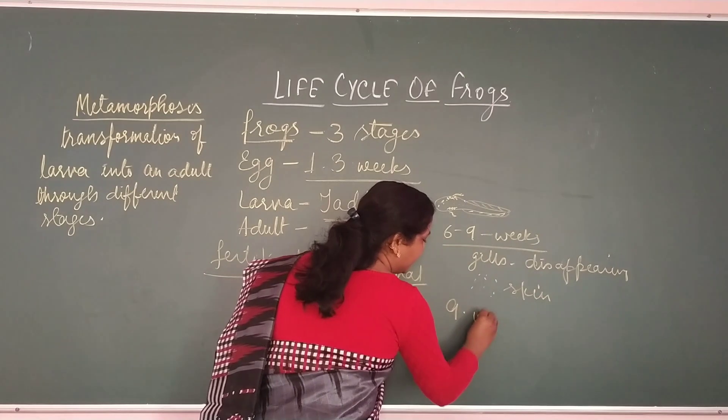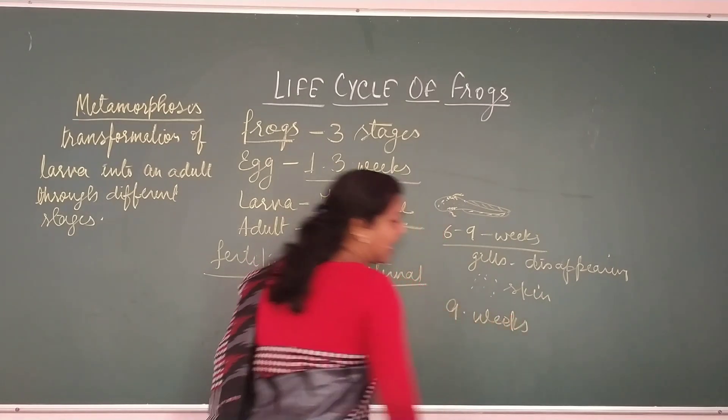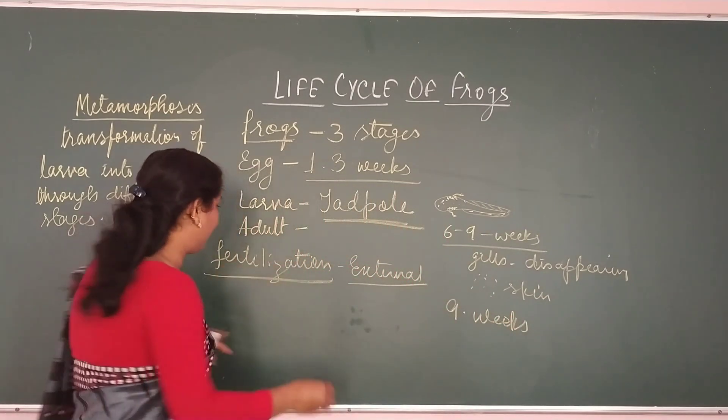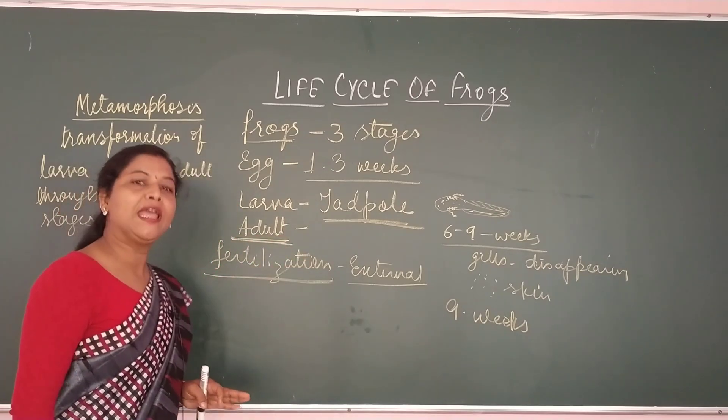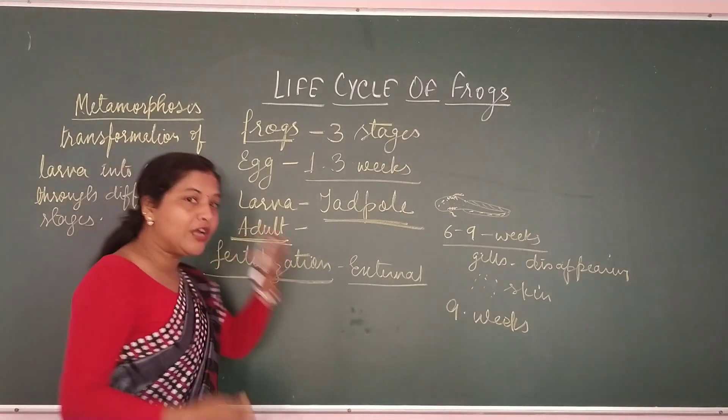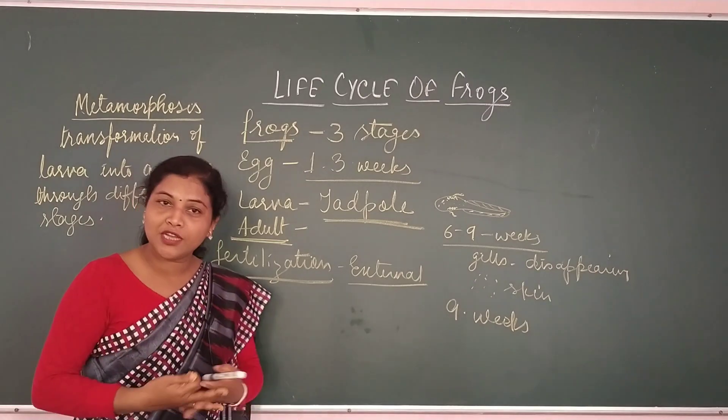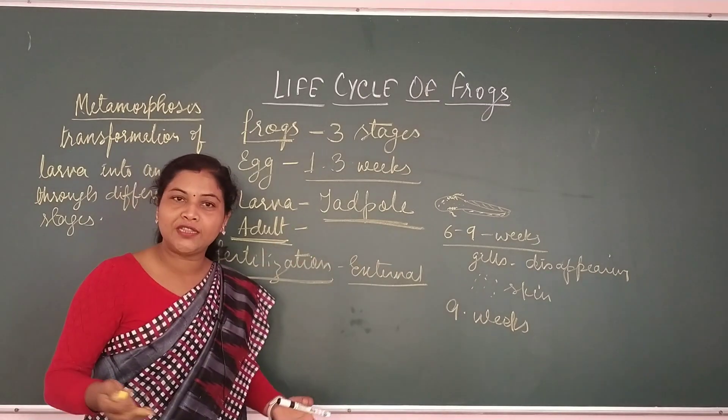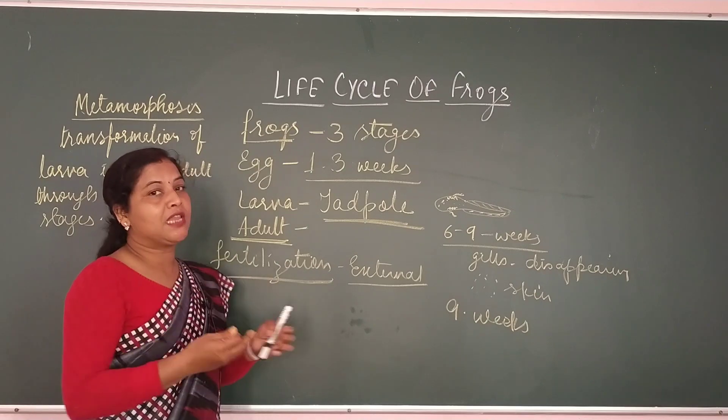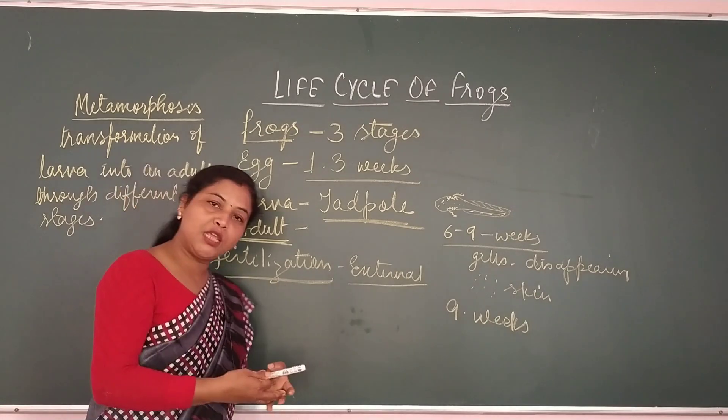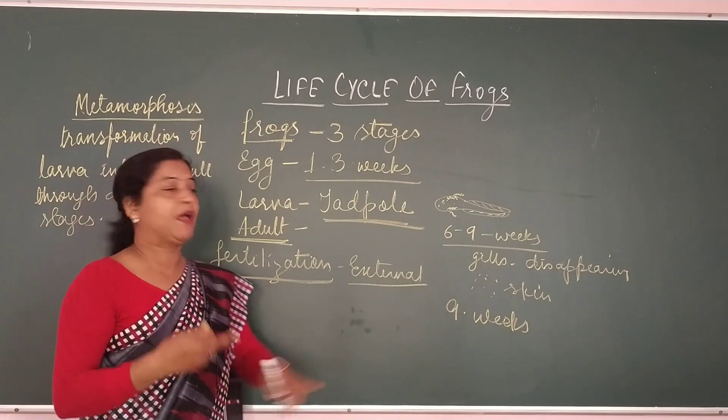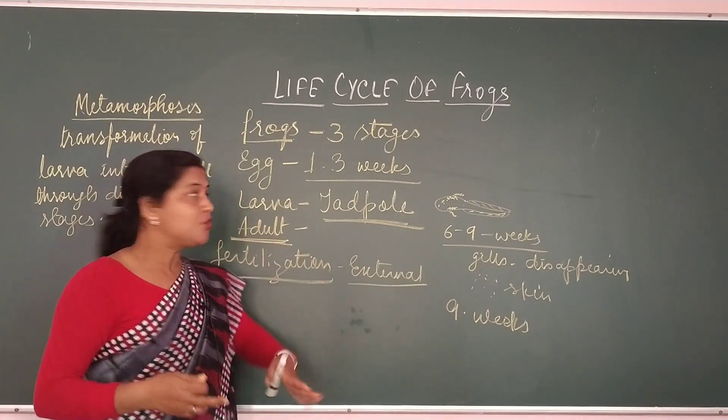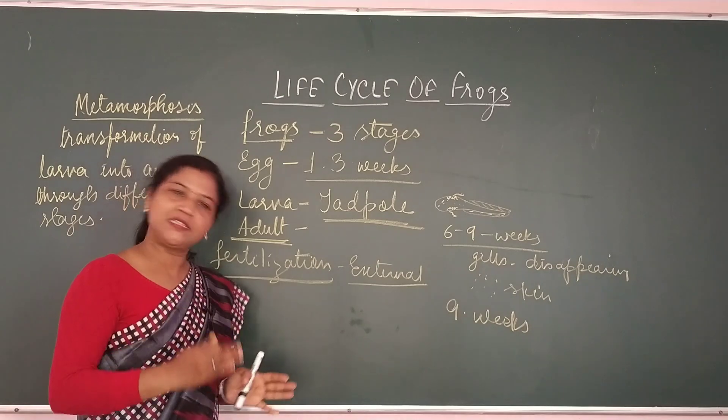And after nine weeks, they grow and develop and they are called adult. Phir wo grow karna shurru karte hai. Unke chaar pair ho jate hain. Gills disappear ho jate hain. Lungs develop kar jate hain. Skin, agar wo paani mein hoote hain, toh skin ke dhwara respire kerte hain. And when they are out of the water, they start respiring through their lungs. So these all changes takes place in frogs. And this is what the life cycle of frog.